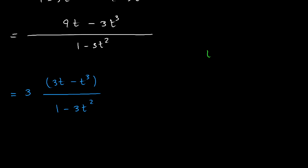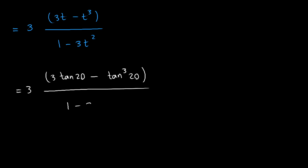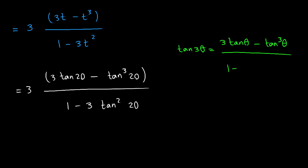Now, since t equals tangent of 20, we replace t back to get 3 times (3·tan(20) minus tan³(20)) over (1 minus 3·tan²(20)). At this point, let's use the triple angle identity for tangent: tan(3θ) equals (3·tan θ minus tan³θ) over (1 minus 3·tan²θ).